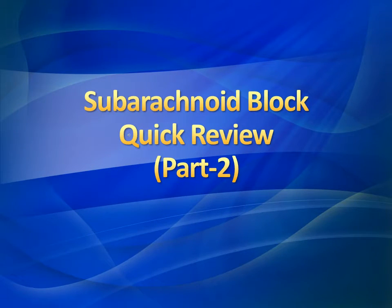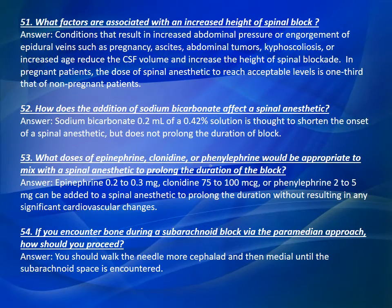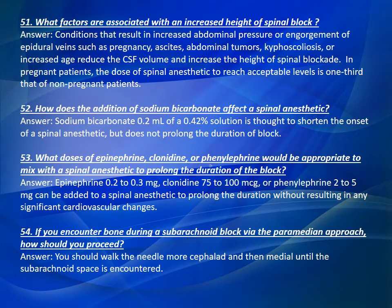Subarachnoid Block Quick Review Part 2, Question 51: What factors are associated with an increased height of spinal block? Conditions that result in increased abdominal pressure or engorgement of epidural veins, such as pregnancy, ascites, abdominal tumors, kyphoscoliosis, or increased age, reduce the CSF volume and increase the height of spinal blockade. In pregnant patients, the dose of spinal anesthetic to reach acceptable levels is one-third that of non-pregnant patients.